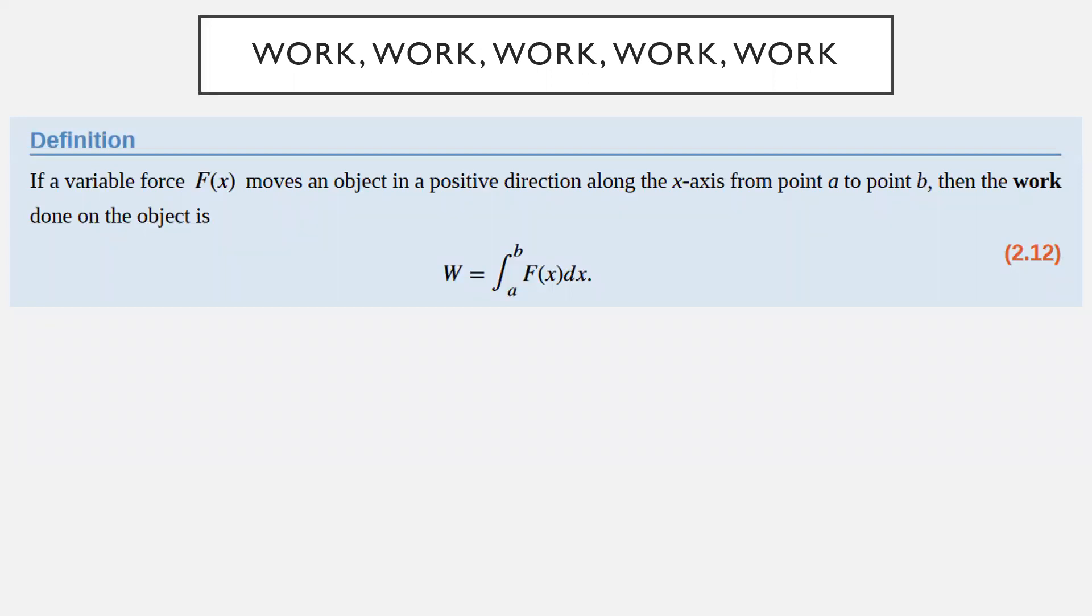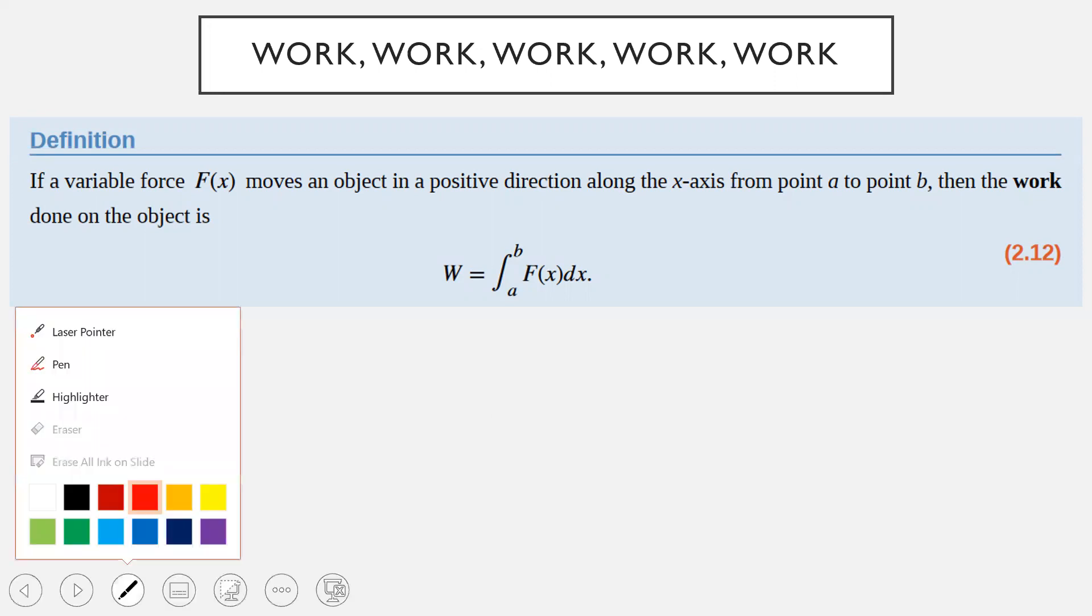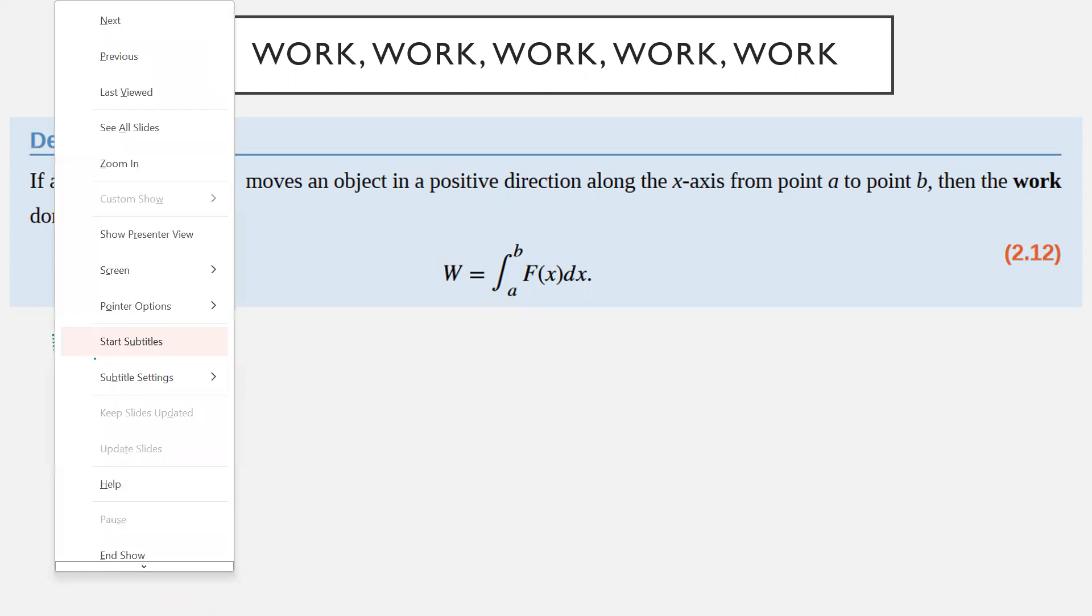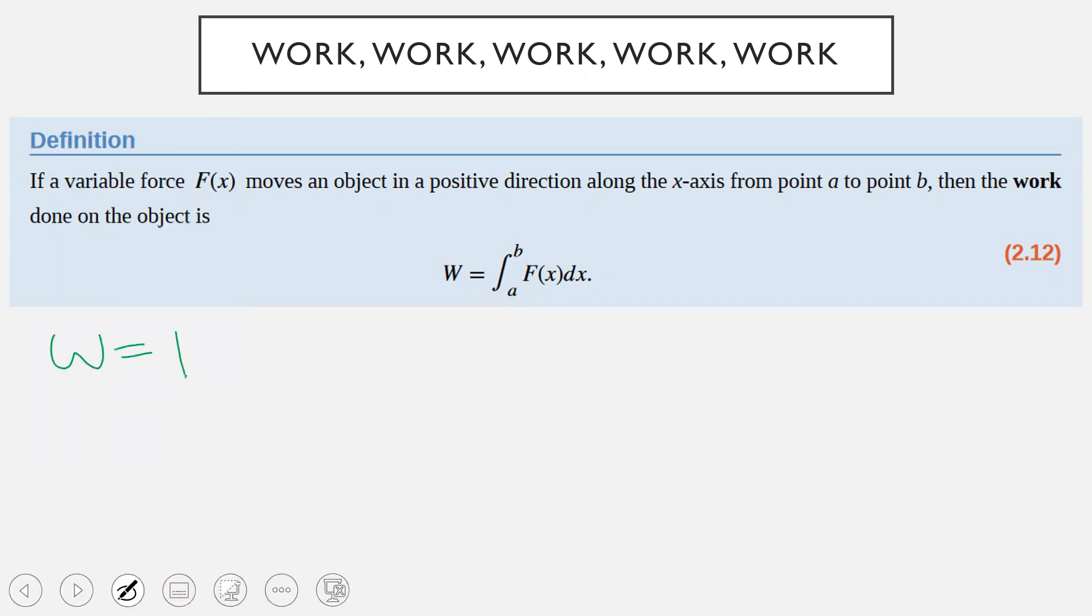So we're going to start by talking about work. And before I talk about what is here on the slide, just want to back up for a second and talk about what work is in general. So if you've taken a physics class before, you may have learned that work is given by force times distance. So it's more or less a measure of a force being exerted over a distance. And so as an example of that, let's imagine that we have a box here at one end of a room. Let's say that the room is five meters across. Actually, we'll say five meters for now.